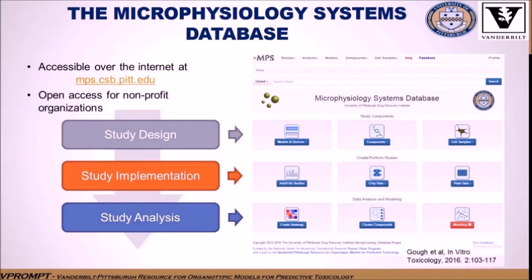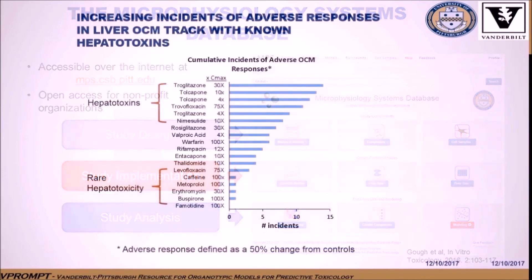An essential component of the liver OCM is the microphysiology database to collect, manage, and allow analysis including use of computational predictive tools. It is web-based and accessible. Shown here is how the database is organized functionally into study design, study implementation, and study analysis. There is also a general global search function to locate information on a compound, study device, toxicology, or component of interest.